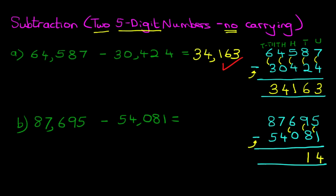6-0 is 6. 7-4 is 3. And lastly, 8-5 is 3. And that is our answer: 33,614.